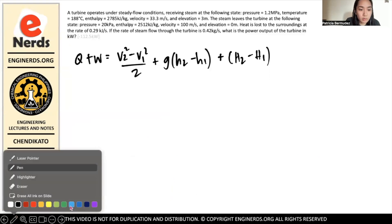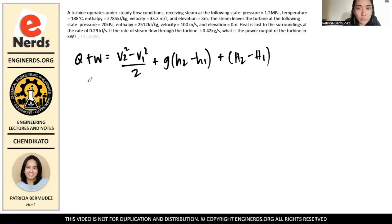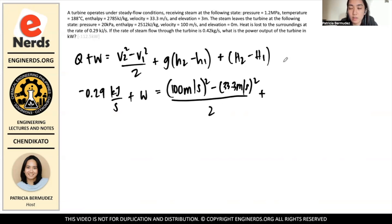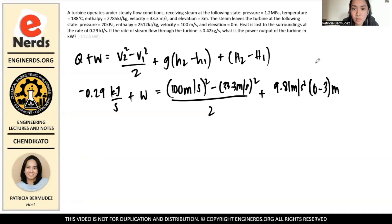Substituting values: Q is negative 0.29 kilojoules per second plus the unknown work. The kinetic energy term is (100 squared minus 33.3 squared) divided by 2. The potential energy term is 9.81 times (0 minus 3) meters. The enthalpy change term is (2,512 minus 2,785) kilojoules per kilogram.